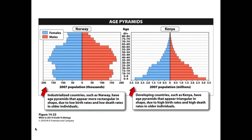Looking at Norway from 2007 as an example, you can see how blocky and rectangular the pyramid is and how narrow the top is. This is because there is a significant but smaller number of people in the very advanced years.